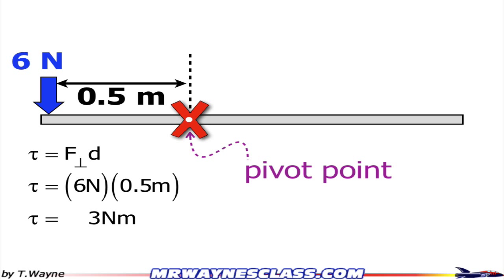Now what I need to do is figure out if this is positive or negative three newton meters. So I need to see how the force is going to cause the beam, the gray beam, to rotate around the pivot point.